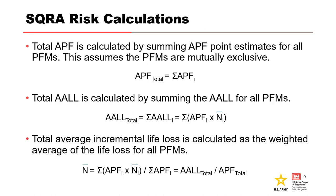Once we have the geometric means, we can calculate the total annual probability of failure, average annual life loss, and average incremental life loss. The total APF is calculated by summing APF point estimates for all potential failure modes, assuming they are mutually exclusive. Similarly, the average annual life loss is calculated by summing values for all PFMs. The total average incremental life loss is the weighted average — the total average annual life loss divided by the total annual probability of failure.